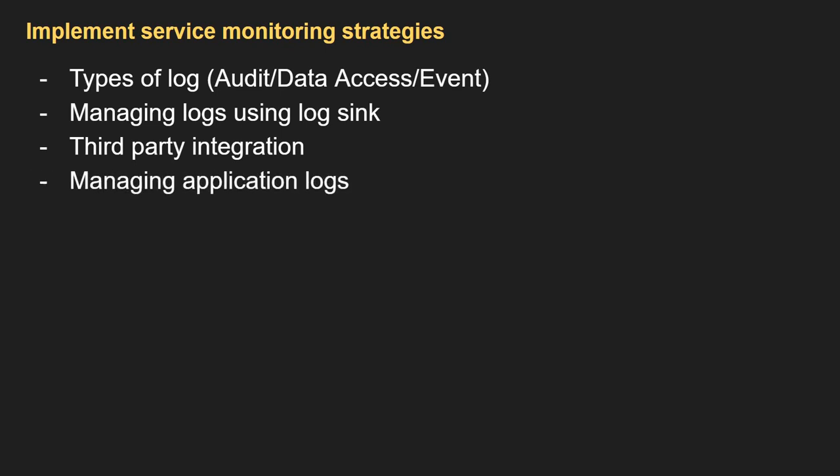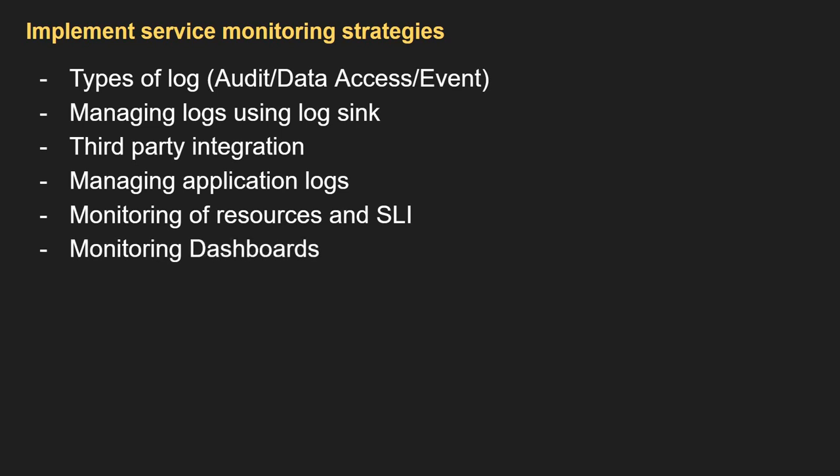For managing application logs: if you have VM or infrastructure-level logs in Cloud Logging but you've installed an application or database on your virtual machine, to get those logs you have to install the Ops Agent — by default, those logs won't appear in Google Cloud Logging. Ops Agent fetches logs related to those processes as well. For monitoring resources and SLIs: for availability, you can set up uptime checks; for latency, you can use Cloud Trace or other metrics. You can set up monitoring dashboards and create custom dashboards for groups of VMs or services.